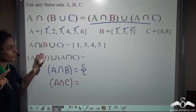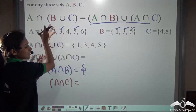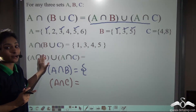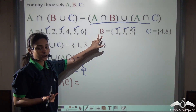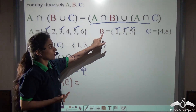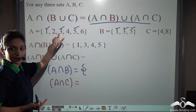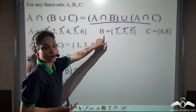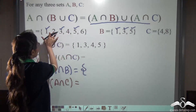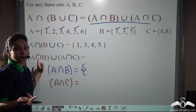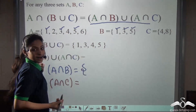Can you tell me one thing here? If all the elements of B are present in set A, what is the special name given to set B? It is called a subset. So if all the elements of any set are present in the other set, then this set will be known as the subset of that set. Here B is a subset of A.